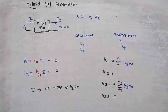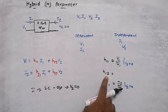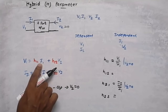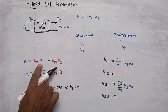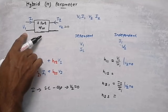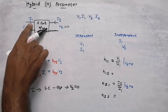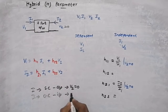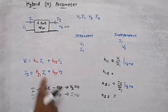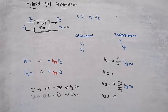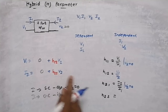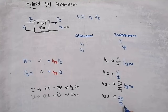For finding h12, the term containing i1 should be zero, meaning i1 must equal zero. To get i1 equal to zero, we need to open circuit the input port. When we open circuit the input port, i1 equals zero. Therefore, h12 equals v1 divided by v2, and h22 equals i2 divided by v2.